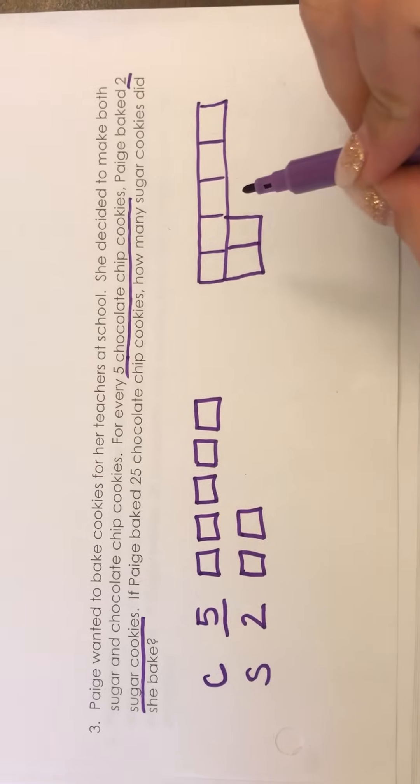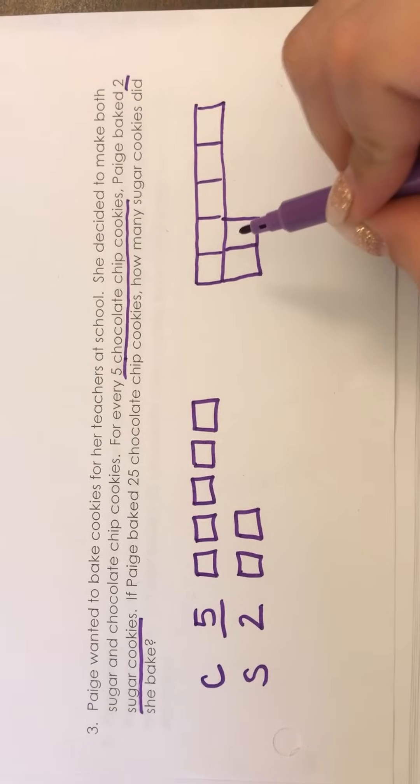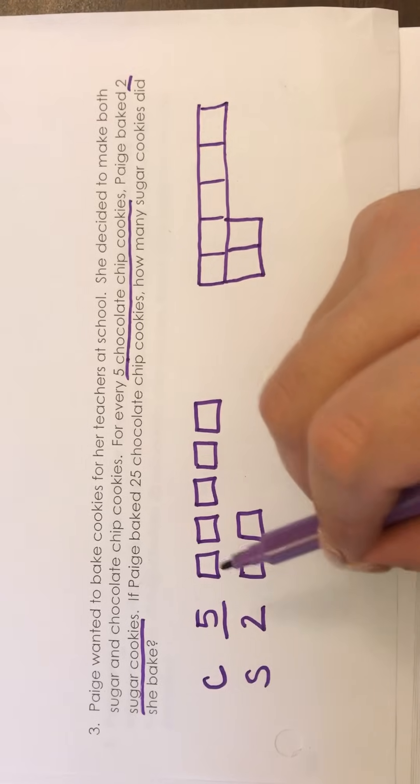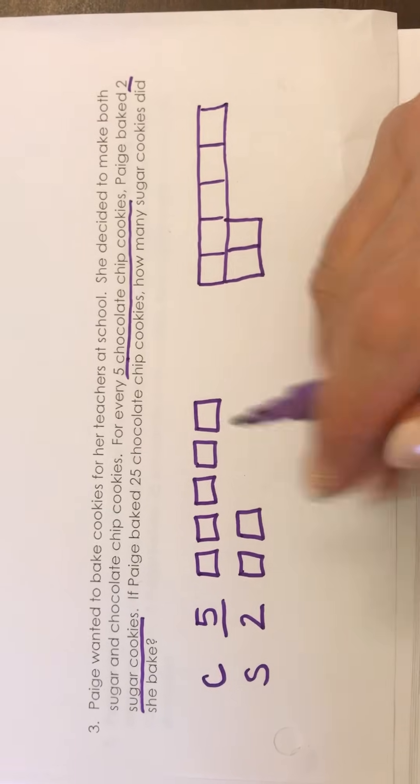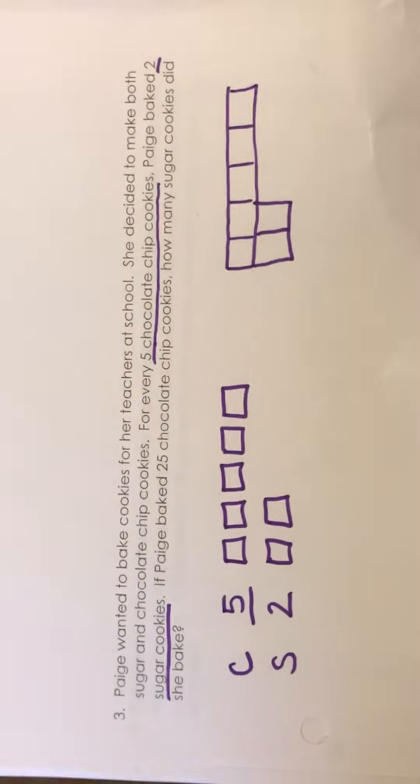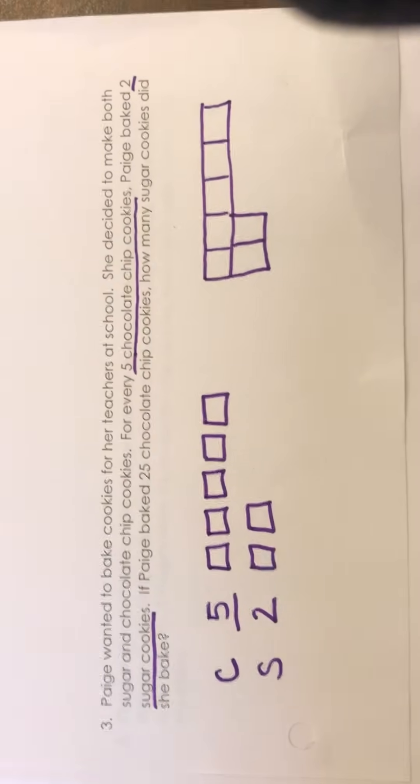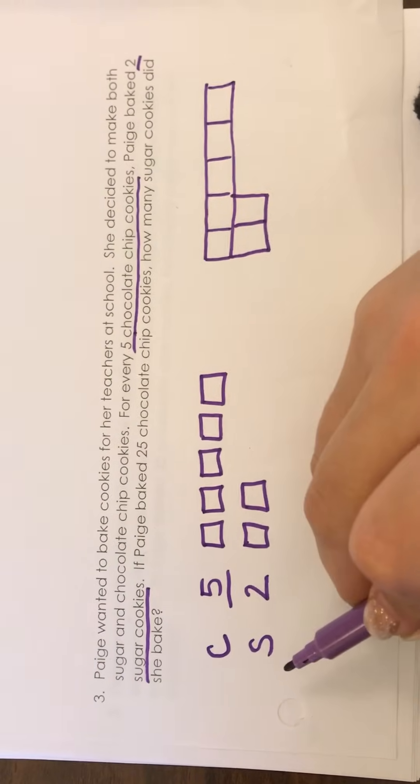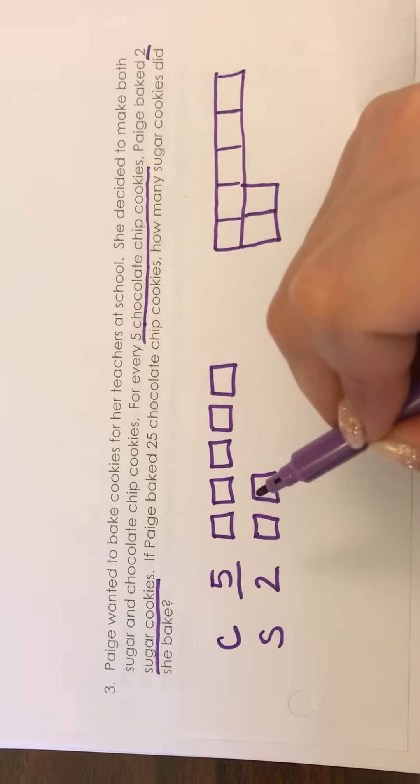So either way is okay. Sometimes it's a little more difficult to do it this way so if you want to just draw your boxes out separate that's fine also. All right so going back to the problem I have my ratio, my labels, and now my tape diagram boxes.